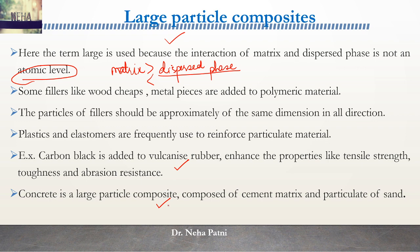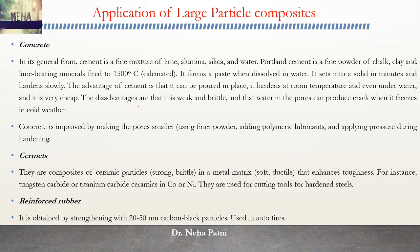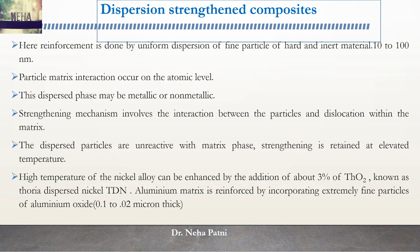Carbon black is added to vulcanized rubber to enhance the property. Concrete is a large particle composite because you mix cement with pebbles - cement is smaller in size, but when you add pebbles to it, it becomes concrete - that is how it is a large particle composite. Other examples include cermets and reinforced rubber where you add carbon black. That is all about large particle composite.